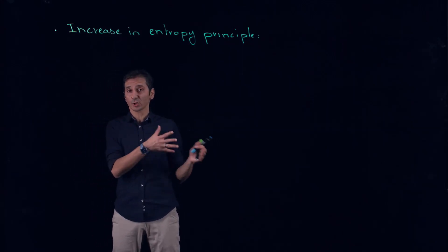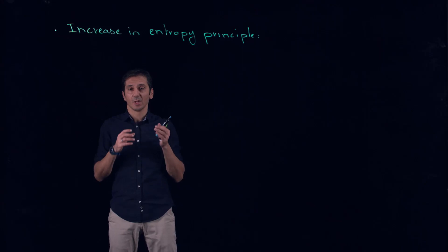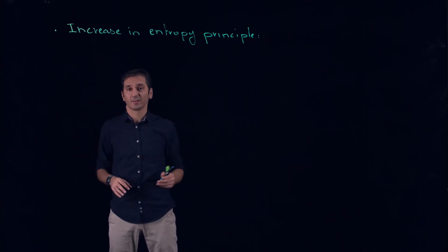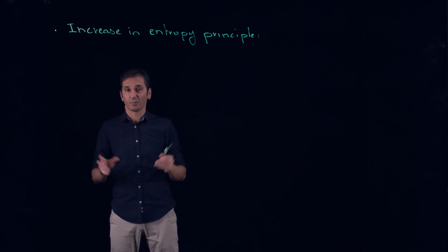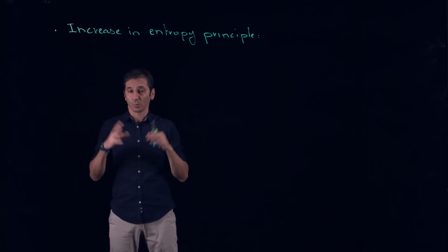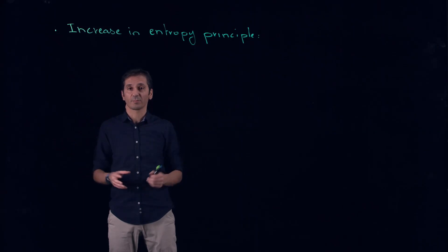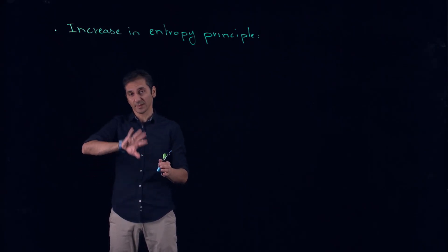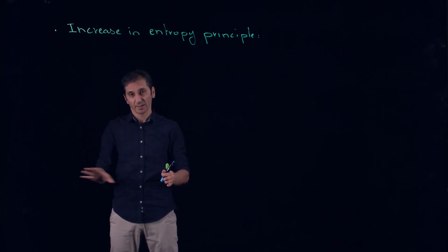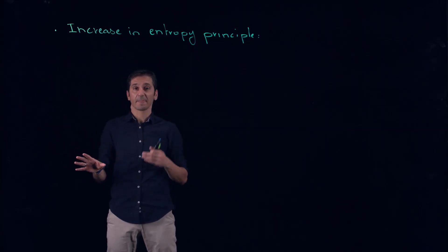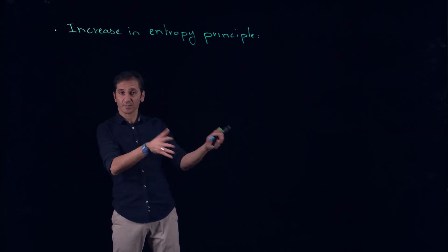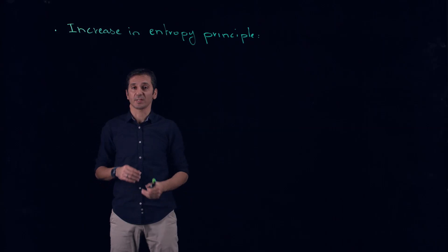The job of the second law of thermodynamics was to clean up this set of processes and to tell us that this set cannot happen, and the rest, for example, is possible.